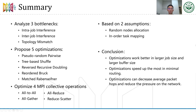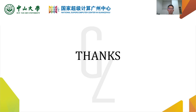At last, here is a summary of our work. We analyzed three bottlenecks of collective algorithms in Dragonfly topology and proposed five different optimizations for four MPI collective operations. Our optimizations are based on two realistic assumptions: random node allocation and in-order task mapping. The results show that our optimizations work better for larger job sizes and larger buffer sizes. They can speed up the most with minimal routing, and can decrease average packet hops and reduce pressure on the network. For more details, please refer to our paper. That's all of my presentation. Thanks for listening.